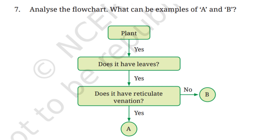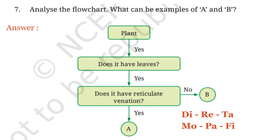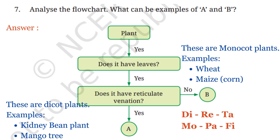Let's analyze the flowchart step by step. A is a plant with reticulate venation and B is a plant without reticulate venation, that is, with parallel venation. A plant with reticulate venation refers to dicot plants — examples are kidney bean plants, mango tree, and radish plants. B is a plant with parallel venation, meaning monocot plants — examples are wheat and maize. So A can be a kidney bean plant or a mango tree, and B can be wheat or maize.